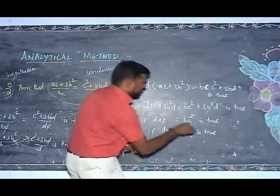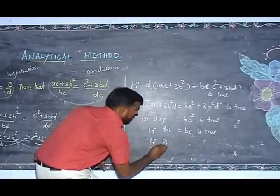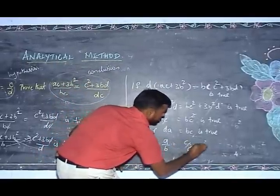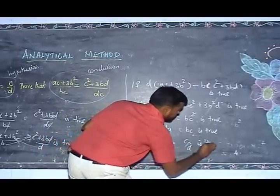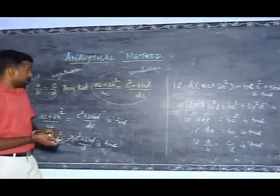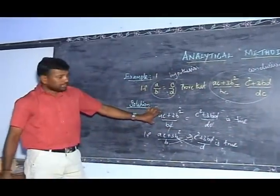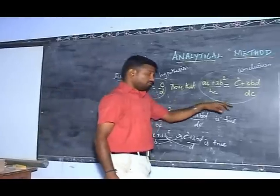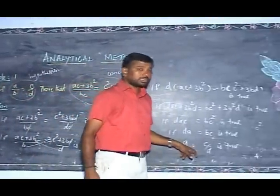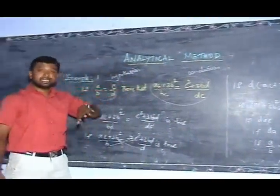Then I cross multiply the terms. If A by B is equal to C by D. From the above example, first I took the conclusion part and then I proved the hypothetical part. Therefore, it is an example of the analytical method.